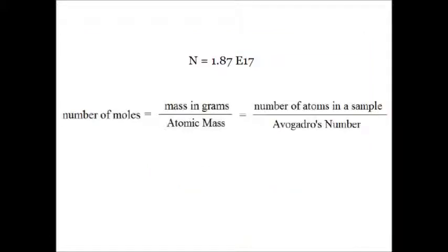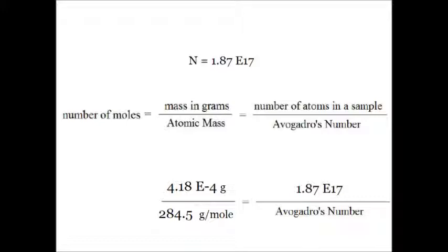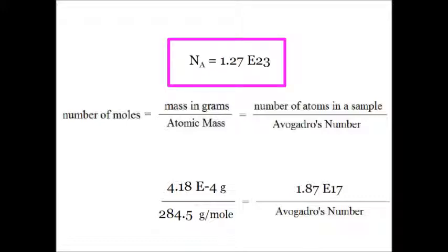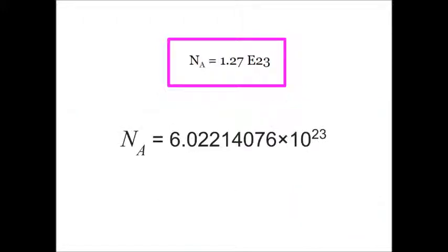Now we're ready to use that equation. We know the mass in grams, we know the atomic mass, and we know the number of molecules in our sample. A little cross-multiplication and division gives us our value for Avogadro's number — which is not exactly the value we were hoping for. If there's a problem, it's in measuring and calculating the area of that puddle. But it's the right order of magnitude, so at least there's that. Maybe there's a better way — that's part two.